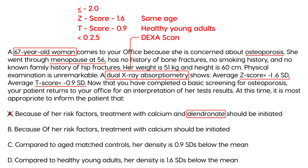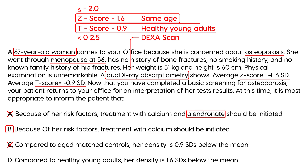Because of her age, recommending calcium is appropriate. Answer choices C and D try to confuse you by mixing up which score compares to which group. Choice C says bone density is 0.9 compared to age-matched controls — that's wrong; 1.6 is compared to age-matched controls. Choice D reverses them similarly. The correct answer is B.